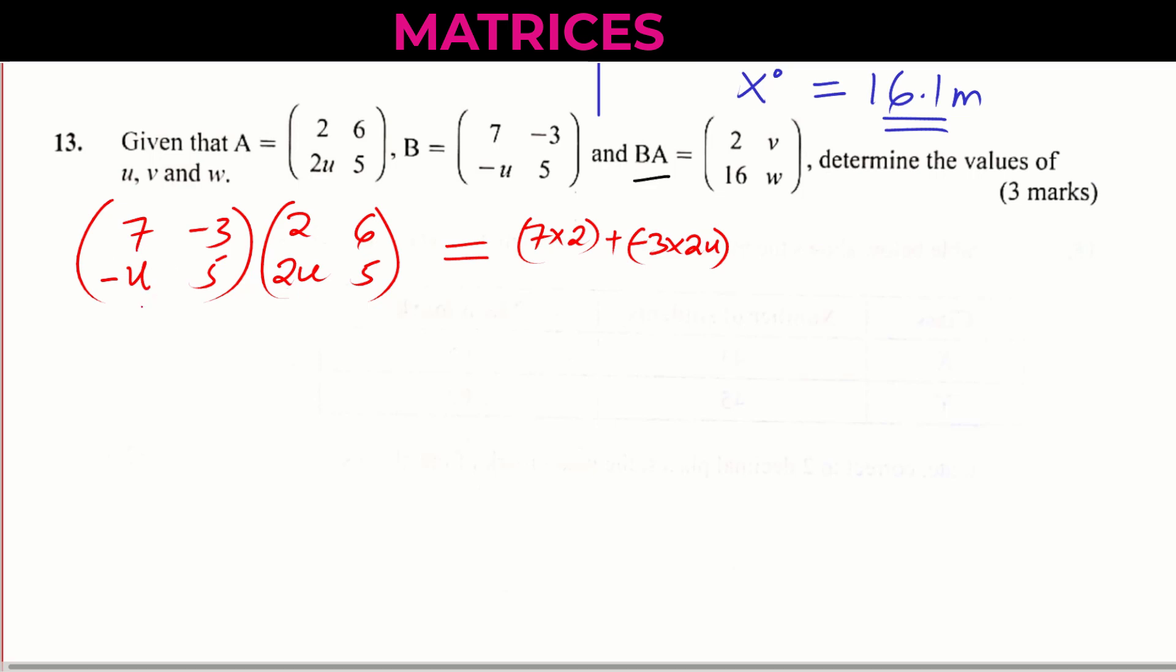Now we go to row 1, column 2. This will be 7 times 6 plus negative 3 times 5. We are through with row 1.